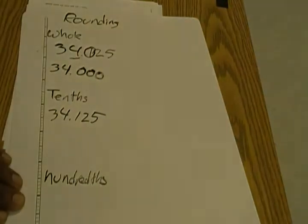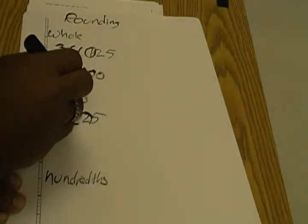Taking that same number, let's round to the tenths place. The tenths place is that one digit. We underline the tenths place and circle the hundredths place because that's the digit to the right of it.